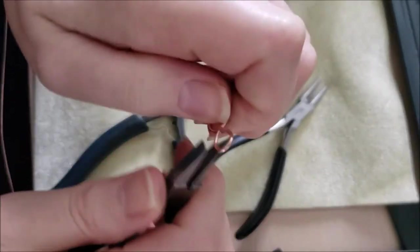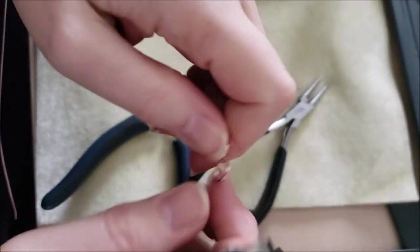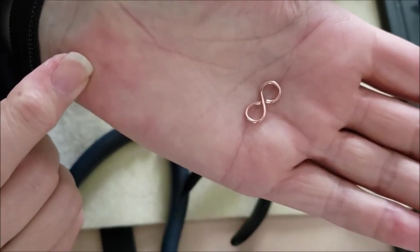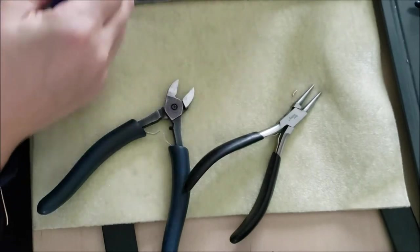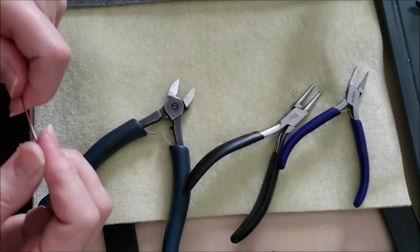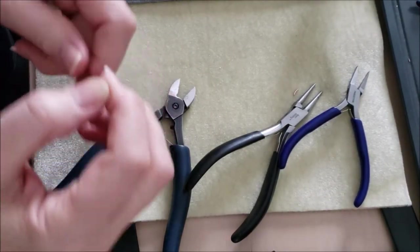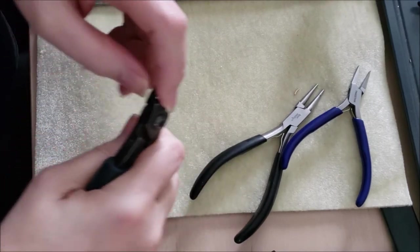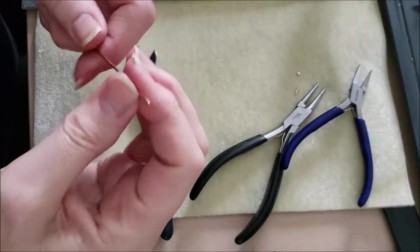If you've got your square nose pliers handy you can go in and grab this and give it a little push. The beginnings of your clasp right there. Now set that to one side. Now go back and square off the end of your wire again.